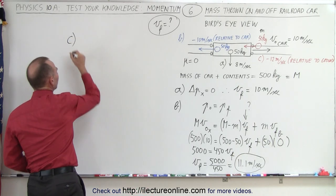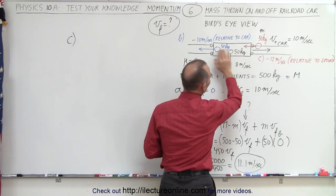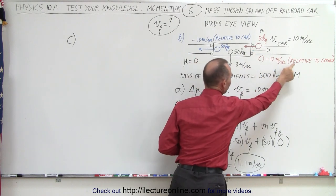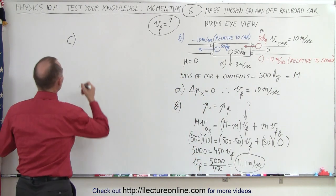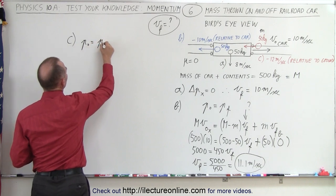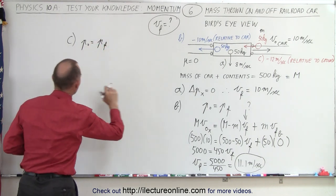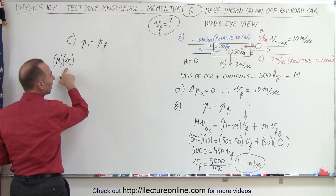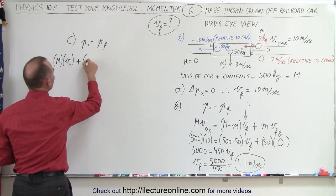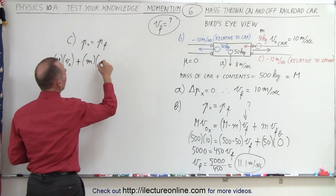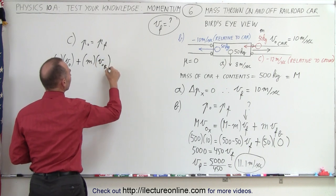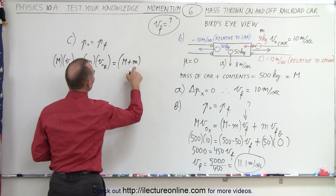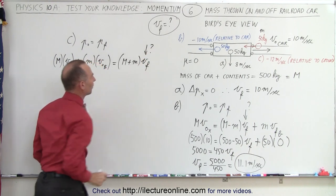Now for part C: the railroad car is moving to the right at 10 meters per second, and an extra bag is thrown onto the car in the opposite direction at 12 meters per second relative to the ground — so minus 12 meters per second. Using P initial equals P final: the initial momentum is the car (500 kilograms) times 10 meters per second, plus the bag (50 kilograms) times minus 12 meters per second, equals (500 plus 50) times V final.